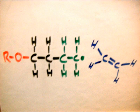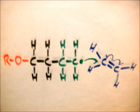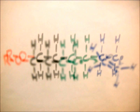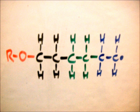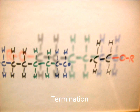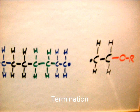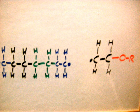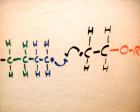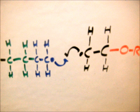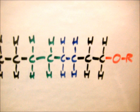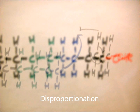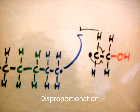This is an extremely fast method of polymerisation and is therefore quite difficult to control. Termination can occur through two mechanisms called chain combination and disproportionation. When chain combination occurs, two polymer chains with radicals combine to form one chain. When disproportionation occurs, an alkene is formed at the end of one chain, whilst an alkene is formed at the end of another.